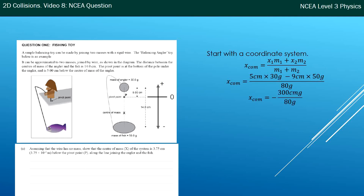The total mass is 80 g. Simplifying gives (5×30 + (−9)×50) / 80 = −300/80 = −3.75 cm. Notice the grams cancel out on top and bottom, so it didn't matter that I used grams instead of kg — as long as you're consistent, they cancel. The final unit is centimetres. The answer is −3.75 cm, meaning the centre of mass is 3.75 cm below the pivot. You can use grams and centimetres, or kg and metres — it doesn't matter as long as you're consistent.